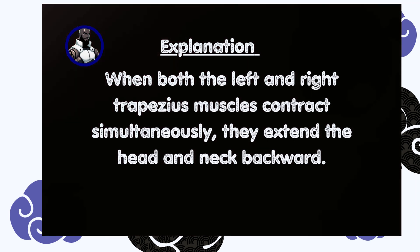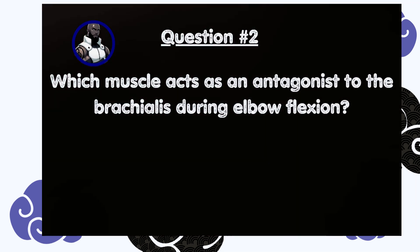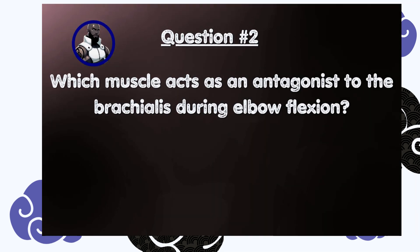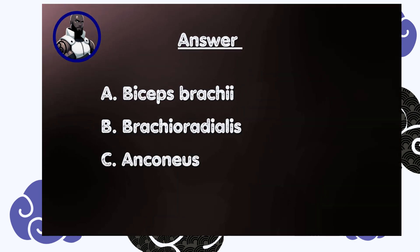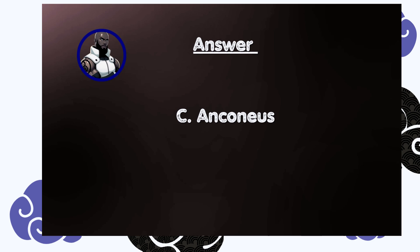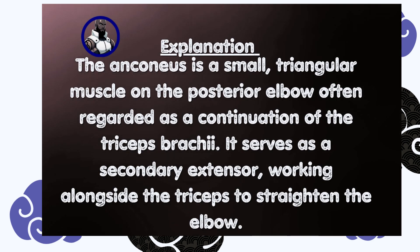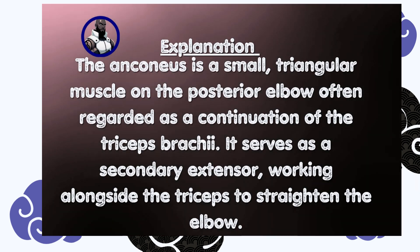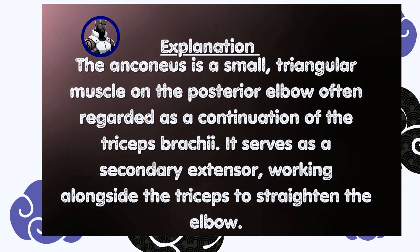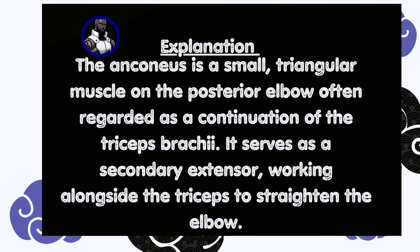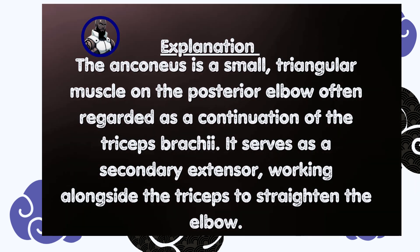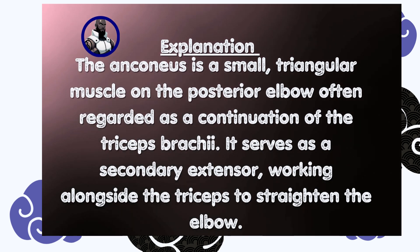Question number two: which muscle acts as an antagonist to the brachialis during elbow flexion? A) Biceps brachii, B) Brachioradialis, C) Anconeus. Answer is C, anconeus. The anconeus is a small triangular muscle on the posterior elbow, often regarded as a continuation of the triceps brachii. It serves as a secondary extensor working alongside the triceps to straighten the elbow.